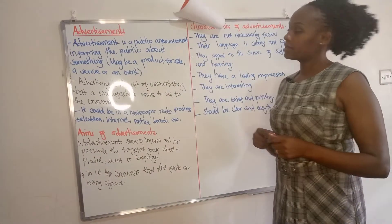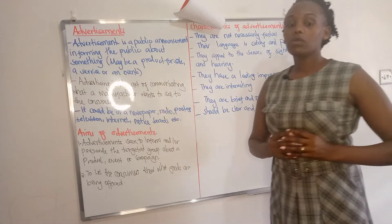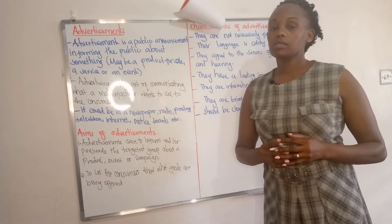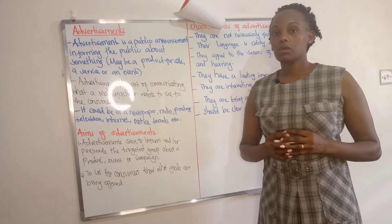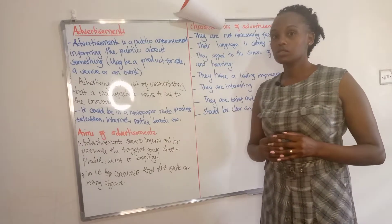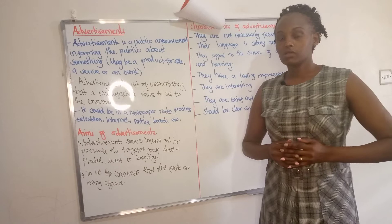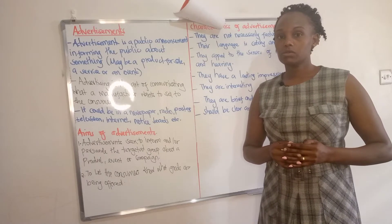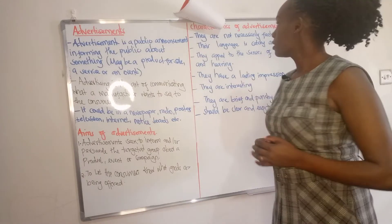Let us look at the characteristics of advertisements. When you're placing an advertisement, it is important, first, to check on the colour of the advertisement. It should be appealing to the eye. It should be catchy to the consumer so that they may be attracted to the product.